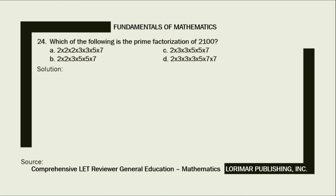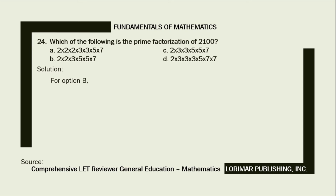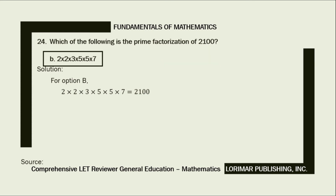The easiest way to find the answer is to perform the mathematical operation for each option. For option A, 2×2×2×3×3×5×7 equals 2,520, so letter A is not the correct answer. For option B, 2×2×3×5×5×7 equals 2,100. So the correct answer is letter B: 2×2×3×5×5×7.